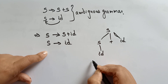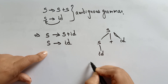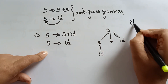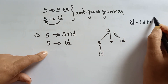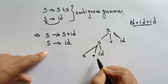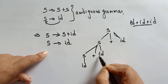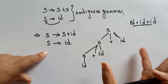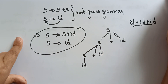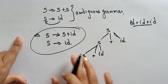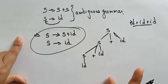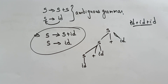Then it can generate only one parse tree — s, s plus id, id. So if you take the same string id plus id plus id, it can be generated with s plus id, and you will get only one parse tree. You can clearly say that this is an unambiguous grammar — this grammar is generating only one parse tree, so ambiguity will be removed.